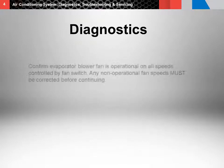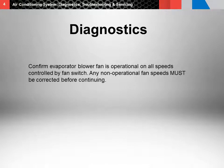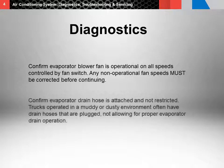Next, confirm the evaporator blower fan is operational on all speeds controlled by the fan switch. Any non-operational fan speeds must be corrected before continuing. Either from the inside or the outside of the truck, confirm the evaporator drain hose is attached and not restricted. Remember, trucks operated in a muddy or dusty environment often have drain hoses that are plugged, not allowing for proper evaporator drain operation.